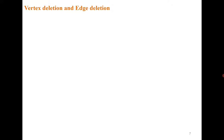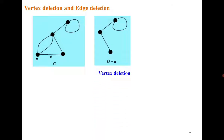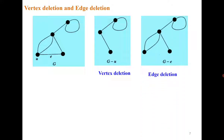The next concept is vertex deletion and edge deletion, which we have already discussed. When you delete a vertex u, all edges incident to u are also deleted since edges must have endpoints. But when you delete an edge, the vertices are not deleted. This is the key difference between vertex deletion and edge deletion.